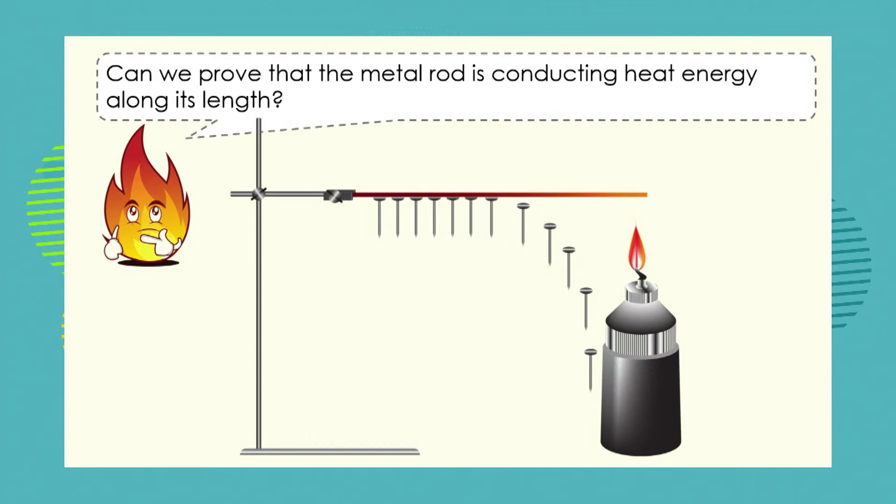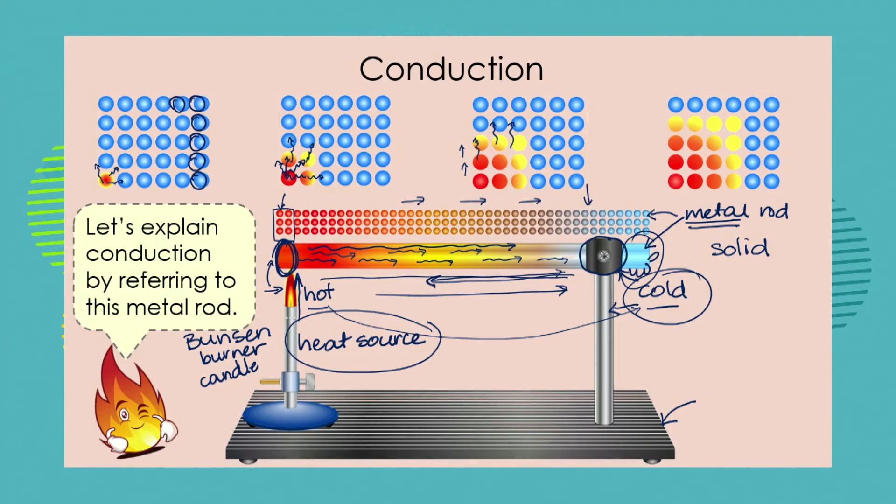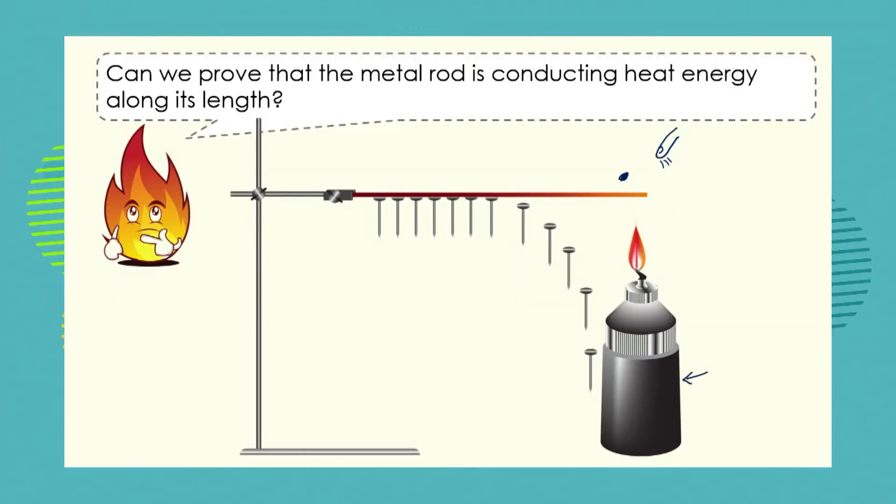Can we prove that the metal rod is conducting heat energy along its length? Now yes, we could touch it with our finger, but that would be rather silly because our finger would then burn. So we need to find a different way to prove that the heat is moving from the heat source. What we do is we prepare the metal rod with a number of nails or thumbtacks or drawing pins, and we secure each little nail or drawing pin to the metal rod using some wax.